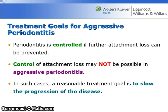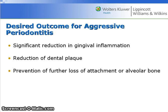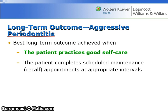Periodontitis is controlled if further attachment loss can be prevented. Control of attachment loss may not be possible in aggressive periodontitis; in such cases, a reasonable treatment goal is to slow the progression of the disease. Desired outcomes include significant reduction in gingival inflammation, reduction of dental plaque, and prevention of further loss of attachment or alveolar bone. The best long-term outcome is achieved when the patient practices excellent self-care and completes scheduled maintenance or recall appointments at the appropriate intervals.